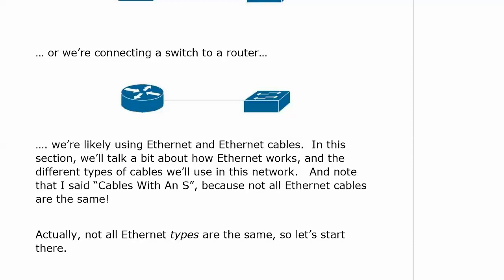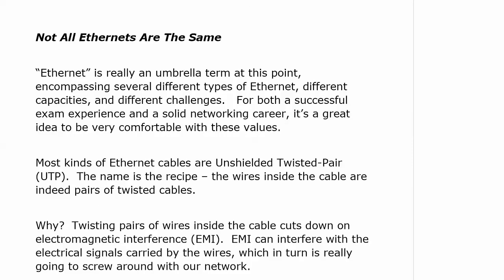In this section we're going to talk about how Ethernet works — there'll be a little bit of that in the switching section as well — but here we're also going to concentrate on the different types of cables we use in a network. Note that I said cables with an S, because not all Ethernet cables are the same. And not all Ethernet types are really the same either. Ethernet is really an umbrella term. We have fast Ethernet, gig Ethernet, and 10 gig Ethernet — when we say Ethernet, we're really talking about all of those. We've got several different types with different capacities and different challenges.